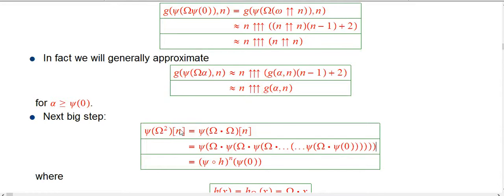Now, that's going to work as long as alpha is pretty decently big, and the only alphas we're really going to be putting in there are things that are at least as big as psi of zero, and that's certainly where this approximation is good. The n minus 1 and the 2 really don't matter. Here's the next big step. We want to put more omegas in here, so psi of omega squared. So let's just look at just briefly at how the ordinal works. What's the rule?